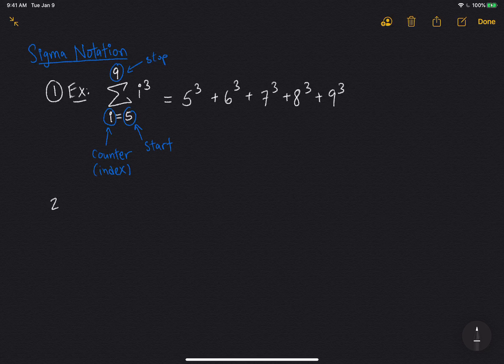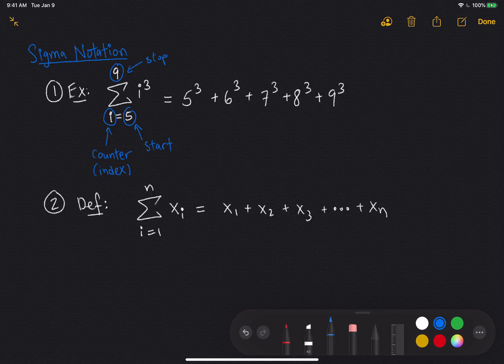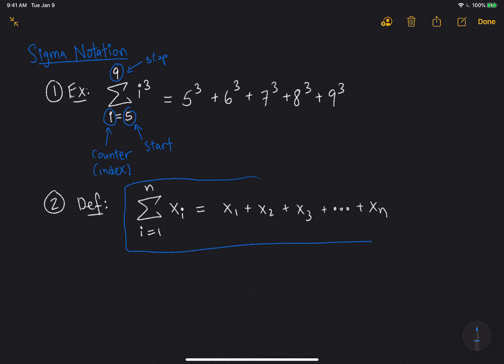Okay, so now let me give you the general definition of what is sigma notation. Well, you write sigma like this, and i equals 1 on the bottom, let's say some number n on the top, and then some general expression xi, something in terms of i. And it just represents the sum x1 plus x2 plus x3, and you add everything up until you get to xn. So this is the general definition of what sigma notation is.